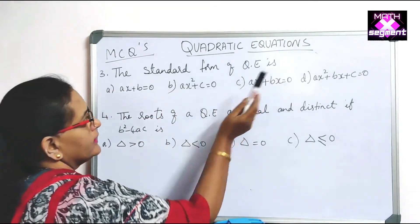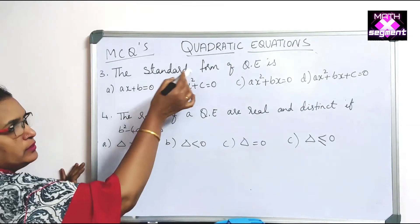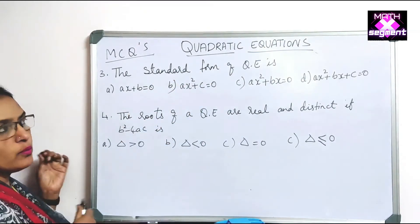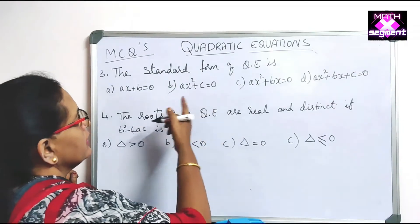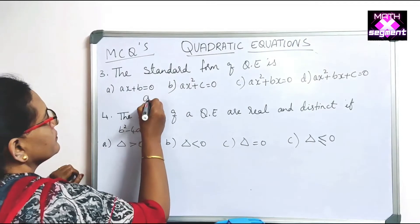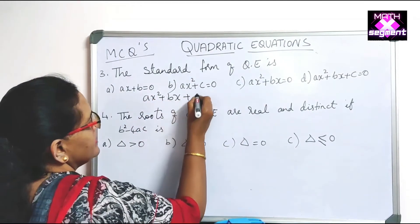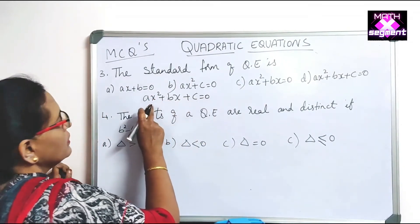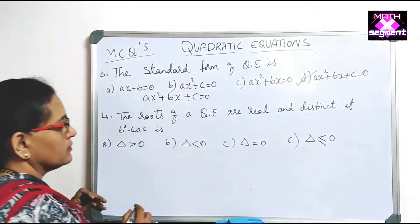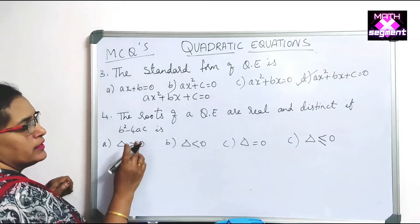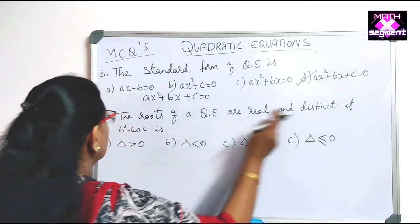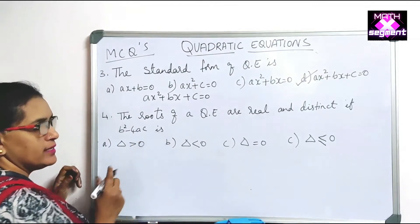MCQ: The standard form of a quadratic equation is — ? As explained in the introduction, the standard form of a quadratic equation is ax² + bx + c = 0. This is option D, so D is the correct answer.